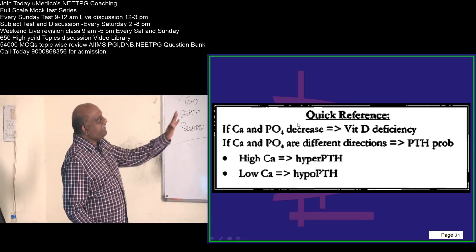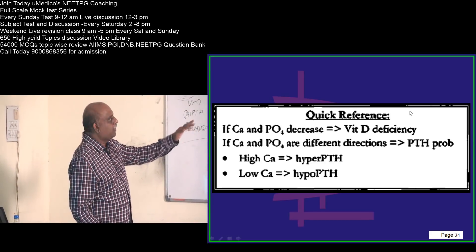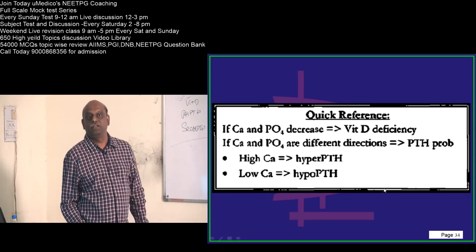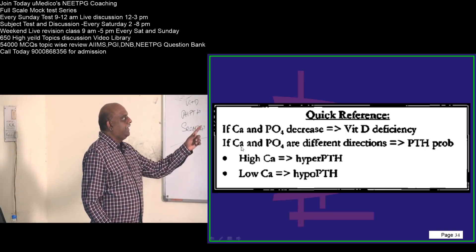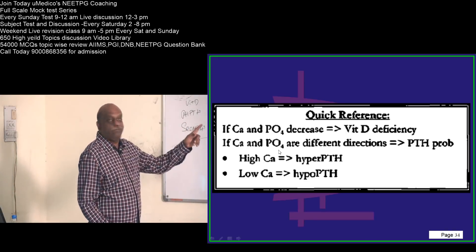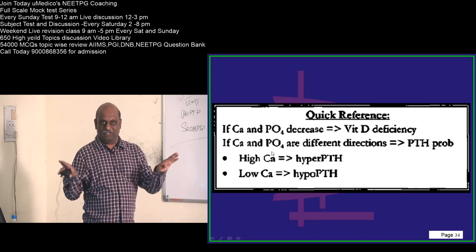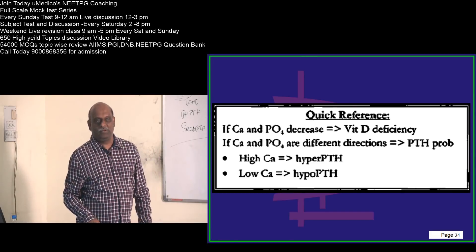If calcium and phosphate both decrease, you call it vitamin D deficiency. But if the calcium and phosphate are moving in different directions, think about parathormone.